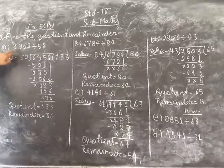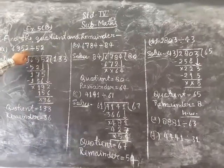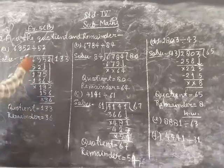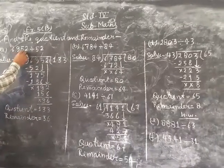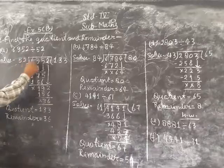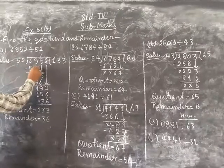Part number A: 6952 divided by 52. So this is 52 divided by 6952. 52, 9 minus 2, 7.